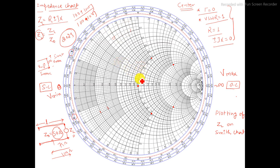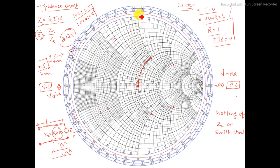Now I will show you certain things to make it easier. This is called the unity circle. On the unity circle, when we have the real value as a matched value, the load value will be plotted on this circle. For example, if I take 1 plus 1j, on the Smith chart we read the real value as 1, so this circle belongs to 1, and here we read the reactive value of 1.0. The intersection of these two gives the normalized load value.